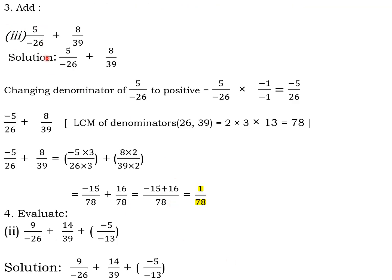Third one: 5 by minus 26 plus 8/39. Again you have to make the denominator positive. Multiply with minus 1 up and minus 1 down. 5 by minus 26 will become minus 5/26. The LCM will be 78. Minus 5/26 plus 8/39 will be minus 15/78 plus 16/78. Minus 15 plus 16 divided by 78. When both different signs are together, we do the minus. So it is minus 15 plus 16, which is 1/78.